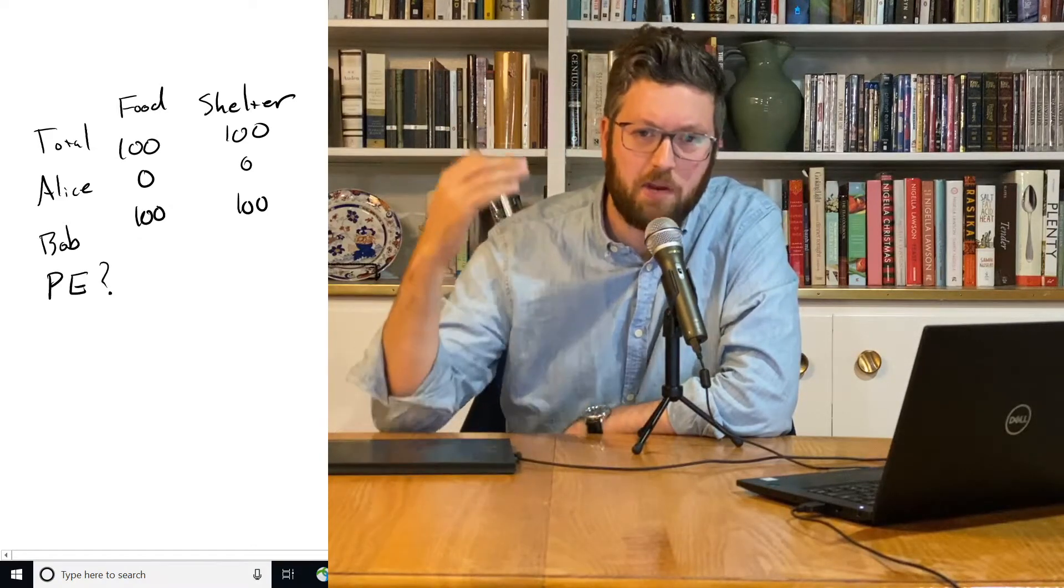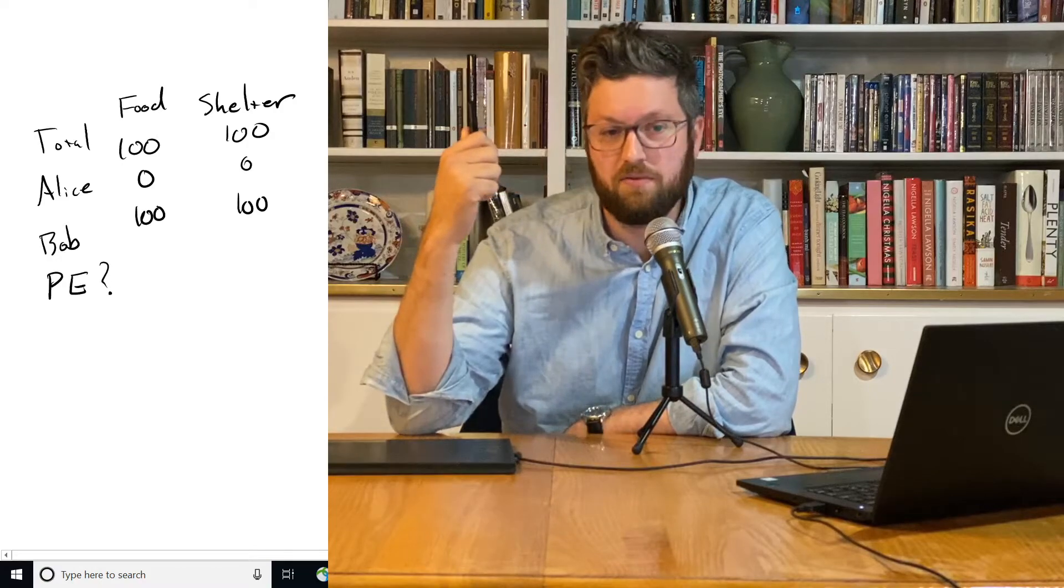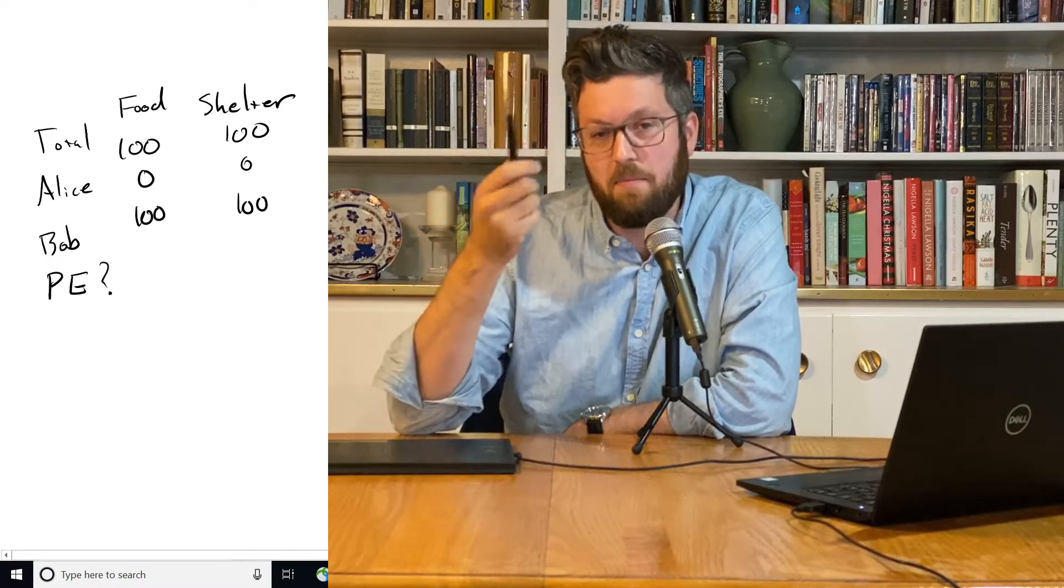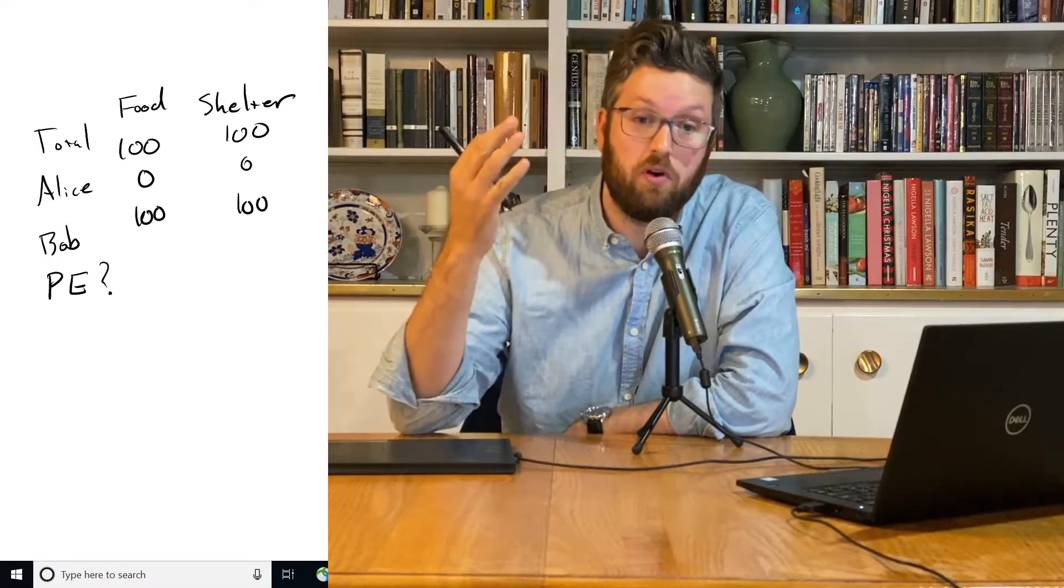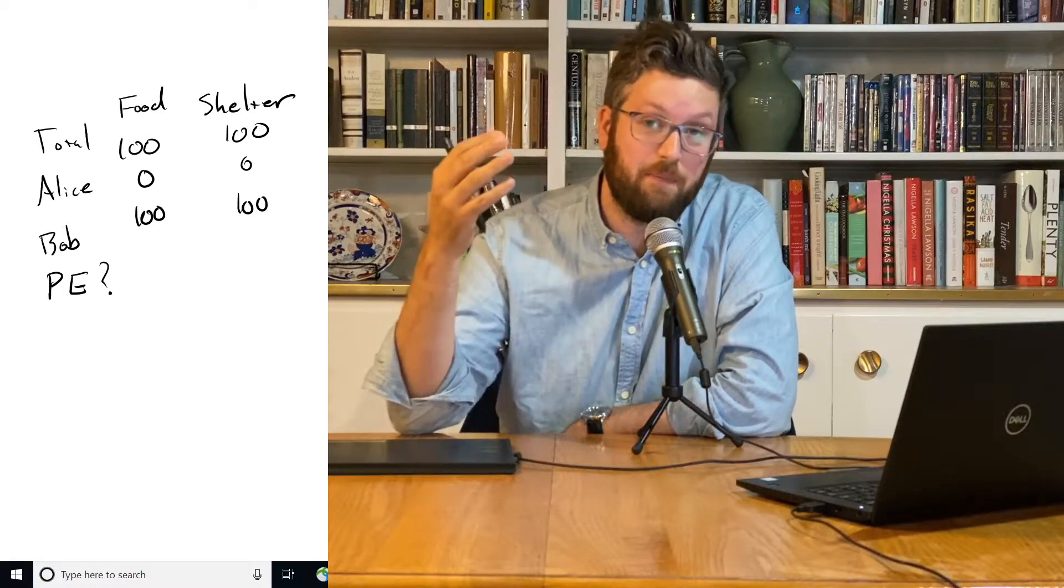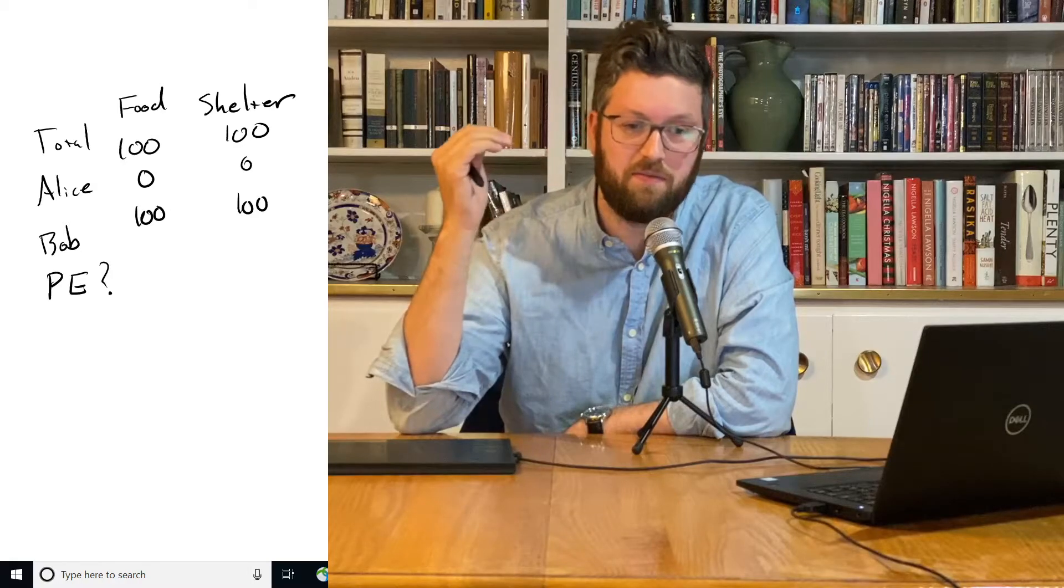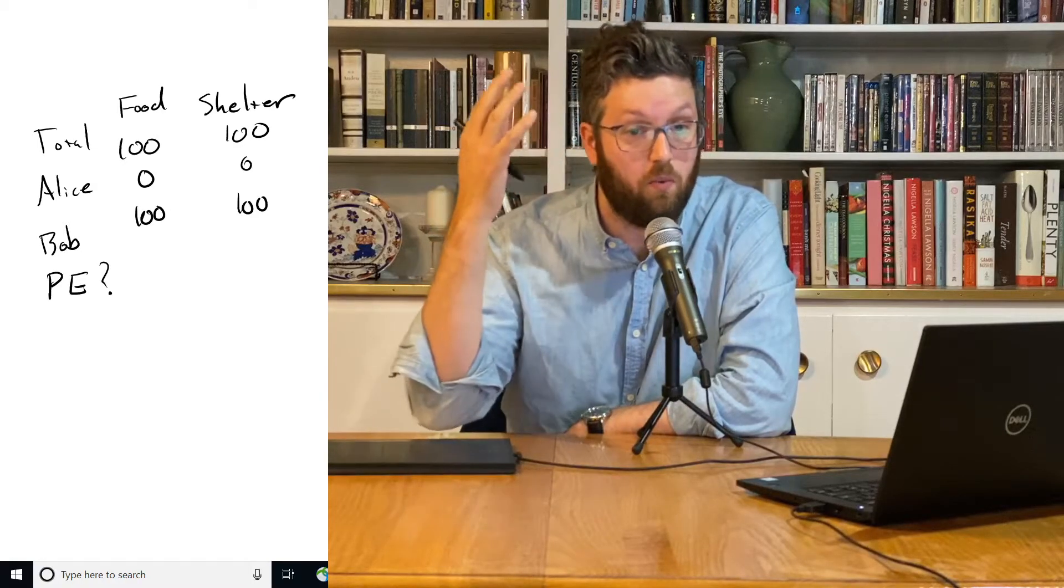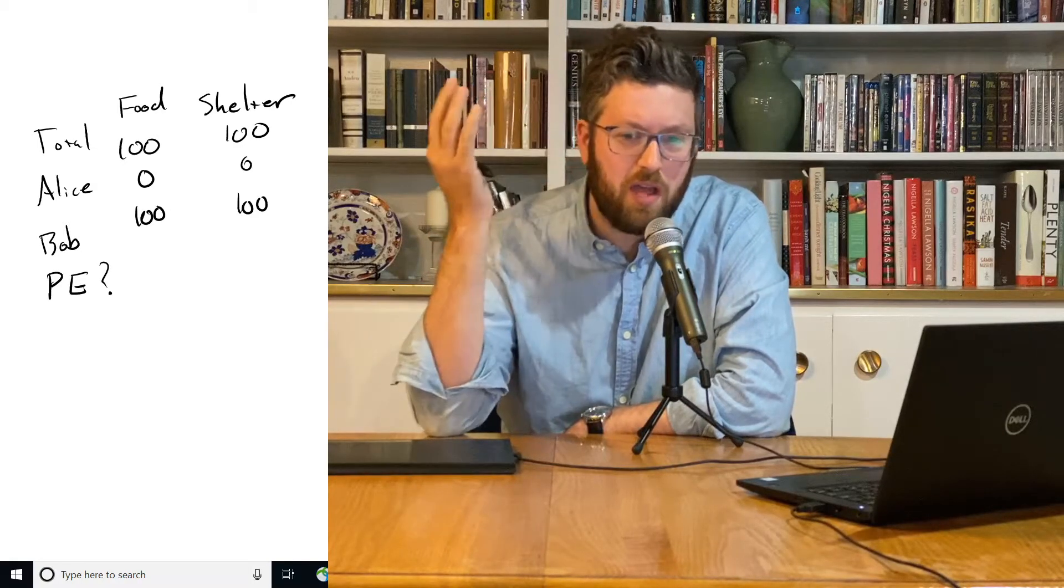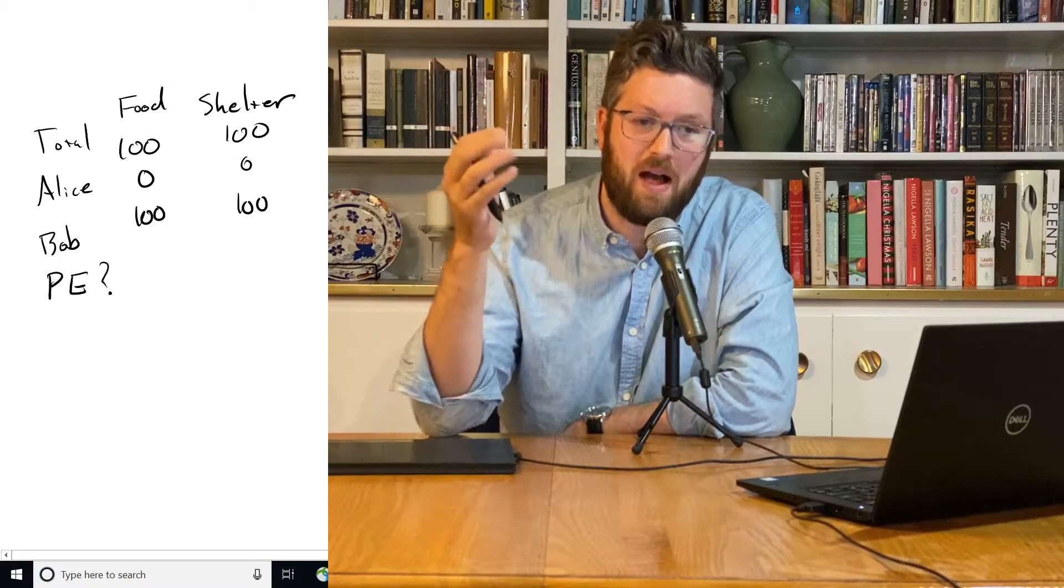Well, can we make anyone better off without making the other worse off? We can't make Bob better off because there's no more food or shelter to give him. He's got it all. We could make Alice better off. We could increase her from 0 to 1. But the only way to do that would be to take some of the food or shelter away from Bob.